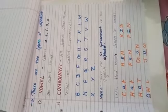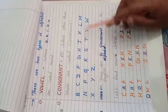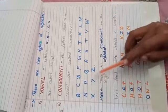You can see b, c, d, f, g, h, j, k, l, m, n, p, q, r, s, t, v, w, x, y, z.